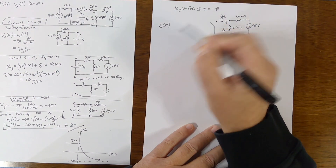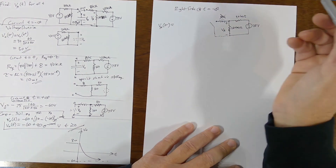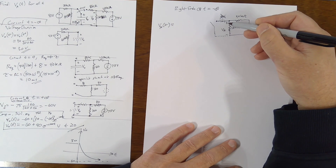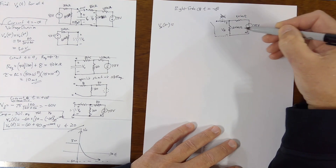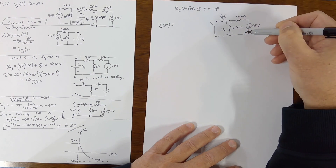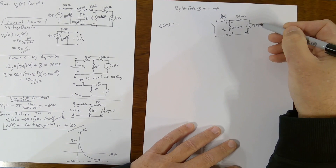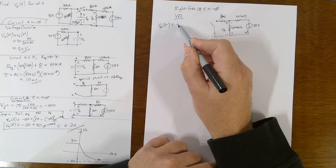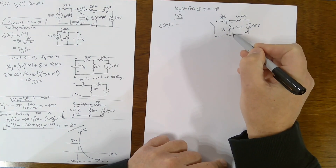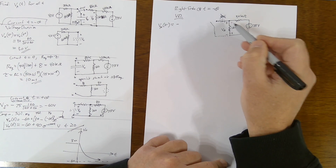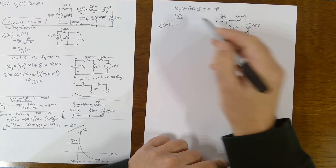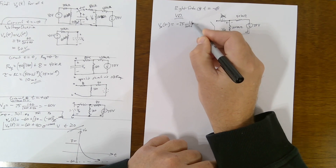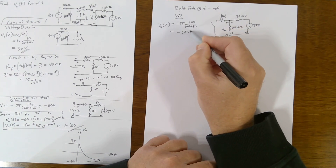So VA at zero minus: there's a minus sign because our reference polarity for VA is plus-minus, but the current comes out of the source and generates the opposite polarity — so we throw in a negative sign. By voltage division: negative 75 times 160 over (160 plus 40), giving VA(0−) equals minus 60 volts.